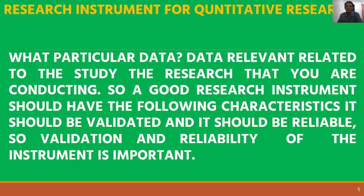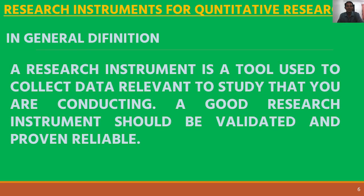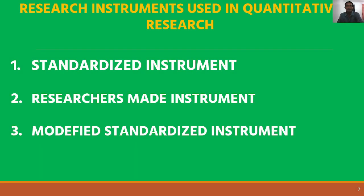A good research instrument should have the following characteristics: it should be validated and it should be reliable. Validation and reliability of the research instrument are essential. Research instruments used in quantitative research fall into three categories: number one, standardized instrument; number two, researcher-made instrument; and number three, modified standardized instrument.